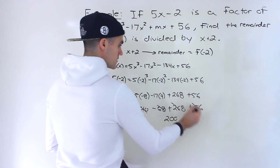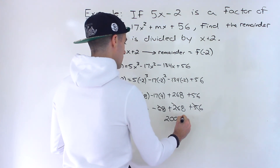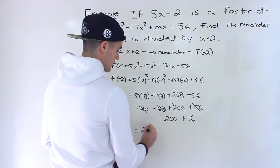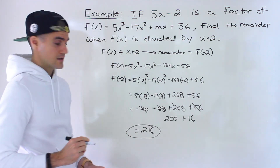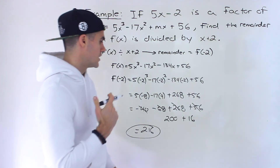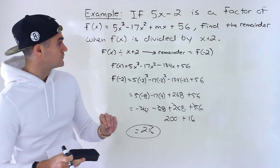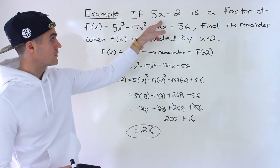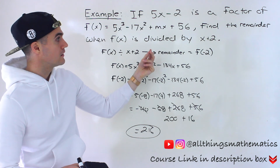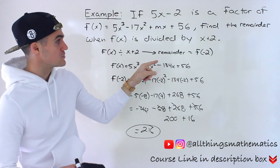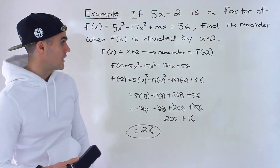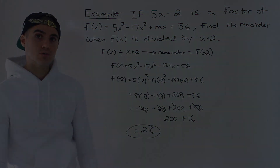These combine nicely: 268 minus 68 is 200, and negative 40 plus 56 is positive 16, so the final answer is 216. To summarize the two steps: first, we used the given factor 5x minus 2 to solve for m by applying f(2/5) = 0; then, with the full polynomial known, we used the remainder theorem to find f(negative 2), which equals 216.